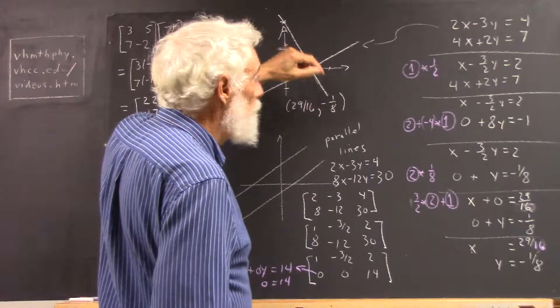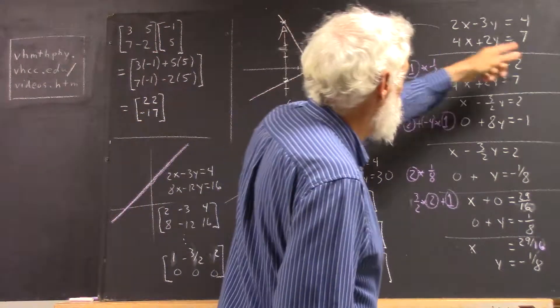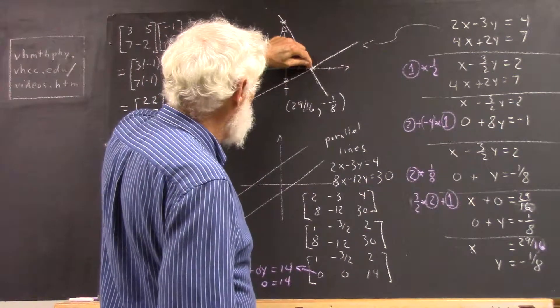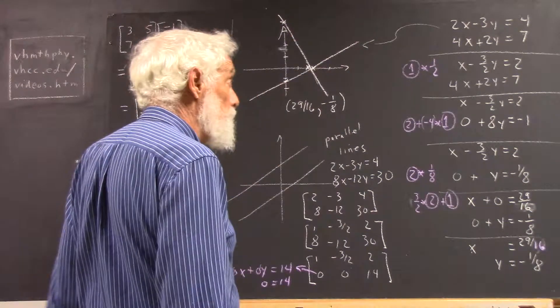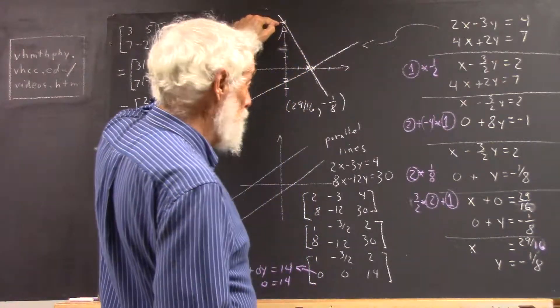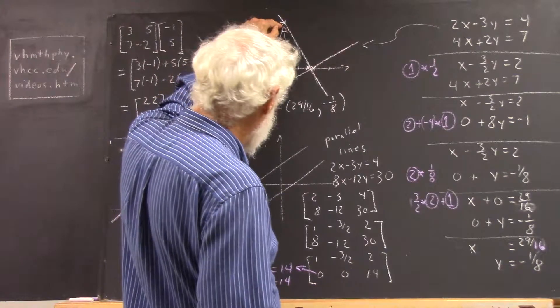We get a point here, and this point's going to be 7 fourths, which is just a little less than 2, so this point's going to be just a little bit to the left of this one, and this point is going to be 0, 3 halves, 7 halves, 0, 3 and a half, way up here.